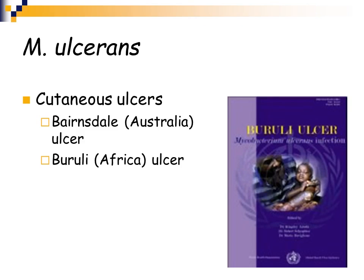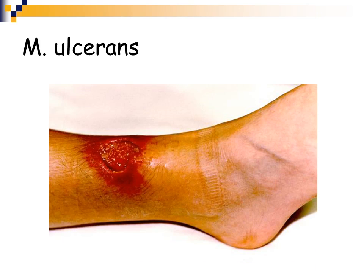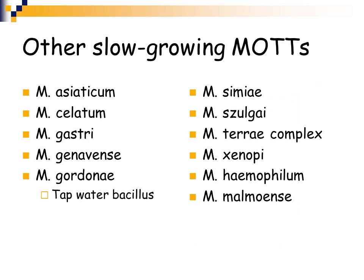Mycobacterium ulcerans is an organism that causes cutaneous ulcers. In Australia it is known as Bairnsdale ulcer, and in Africa it is known as Buruli ulcer. It produces a very ulcerative lesion. Some other slow-growing MOTs or non-tuberculous mycobacteria are also listed in this section.